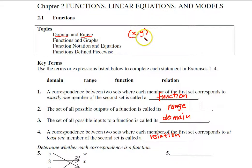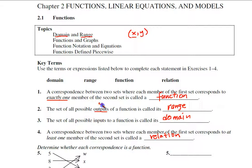Keep these things in mind as we look at the answers. The key in number one is 'exactly one member' — it's only used once, so that would be a function. The outputs are referred to as Y, which is the range. The inputs are referred to as X, which is the domain. And if they are related, that creates a relation.